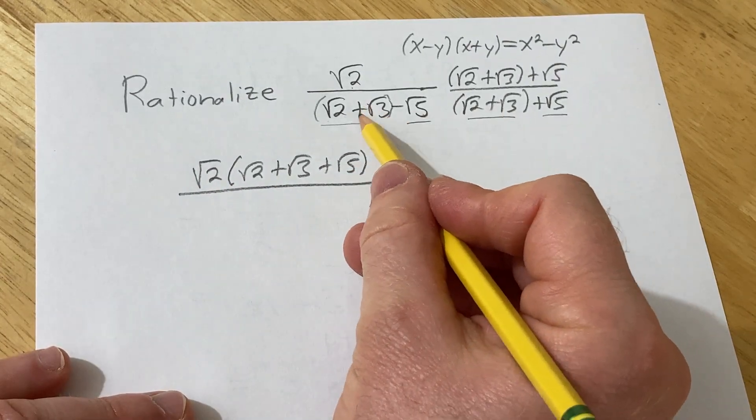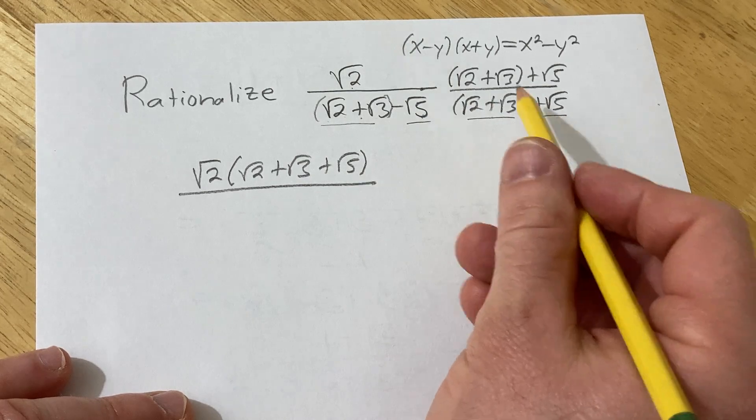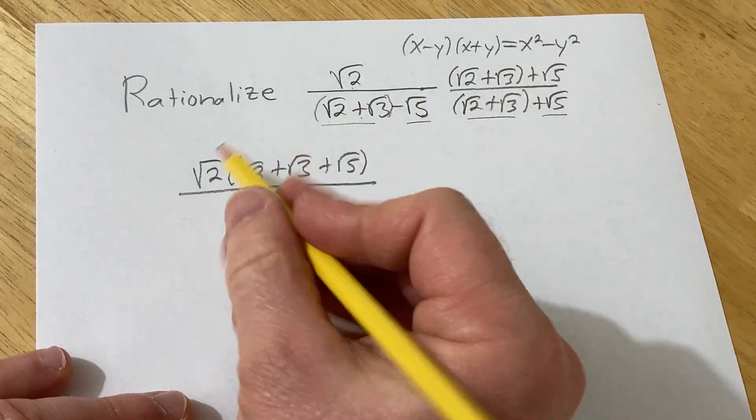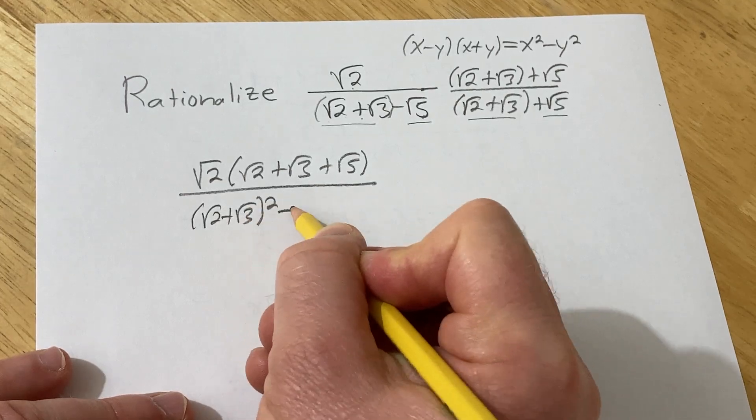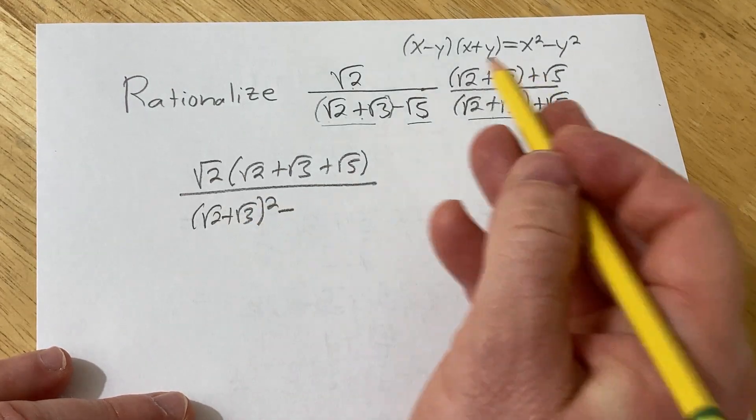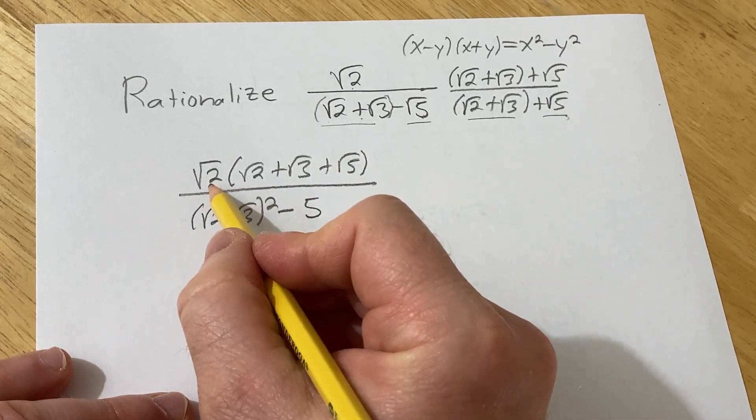And then down here it's x minus y, x plus y, so it's x squared minus y squared. So you square this one. Minus, and then you square the square root of 5 and that becomes 5.